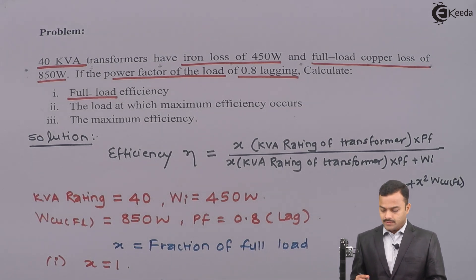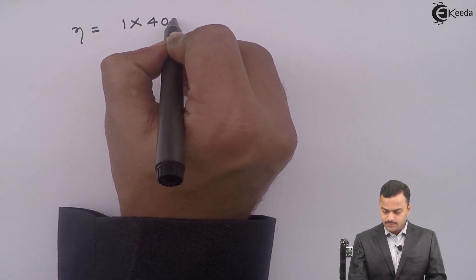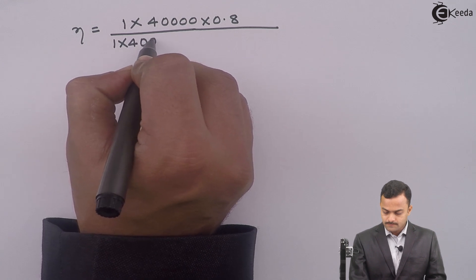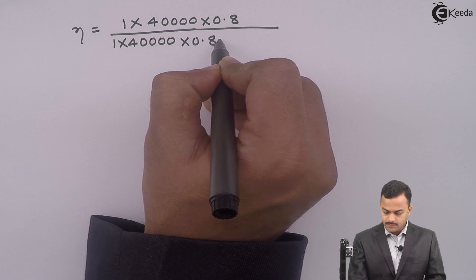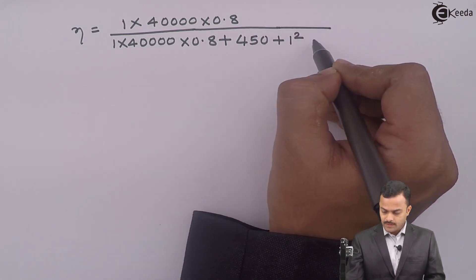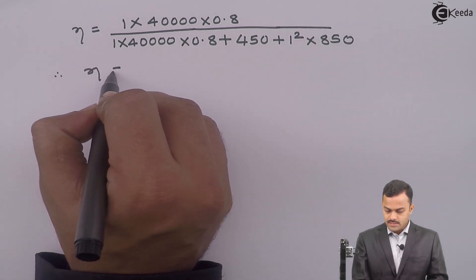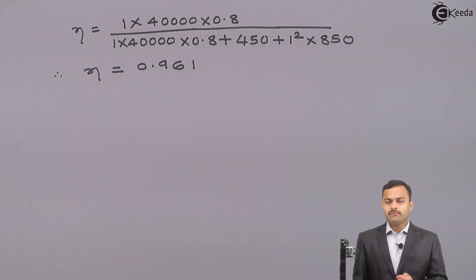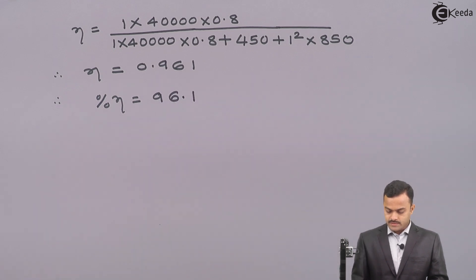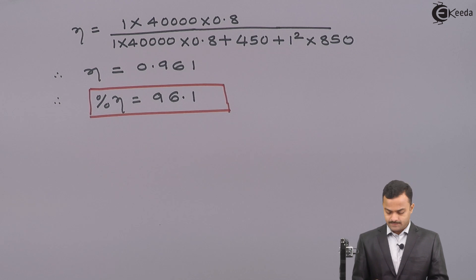Substituting for full load efficiency: x is 1, kVA rating is 40,000, power factor is 0.8, divided by 1 multiplied by 40,000 multiplied by 0.8, plus iron loss 450, plus 1-squared multiplied by copper loss 850. Solving this gives efficiency equal to 0.961, or in percentage, 96.1%. So the full load efficiency is 96.1%.